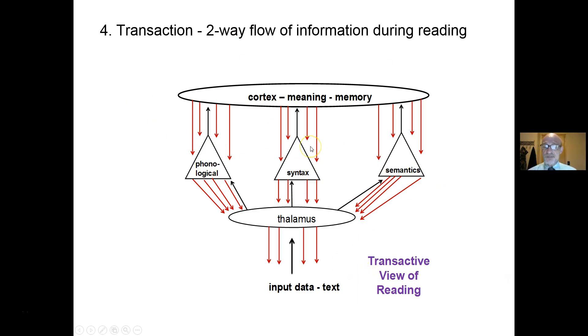But brain imaging research is actually showing that there's almost ten times more information flowing down to the thalamus than down to the page as we read. We're using what's in the head to understand what is on the page. So we're using background knowledge as well as the three cueing systems to identify words as we read.